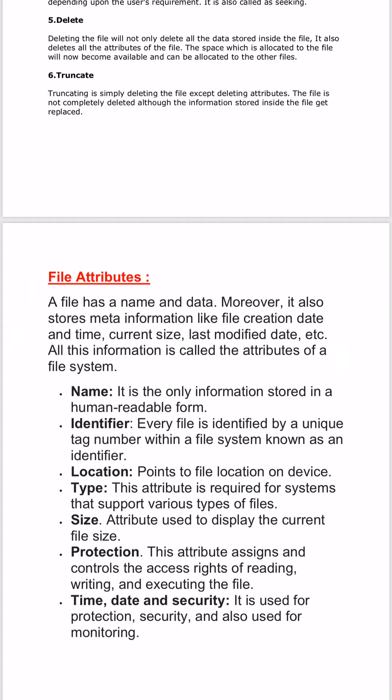The third attribute is location — it stores the pointer to a device and location on that device where the file is stored. The next attribute is type — this attribute is required for systems that support various types of files. If we have many types of files, we have to mention the type attribute, indicating which type of file it is: text file, word file, and so on.